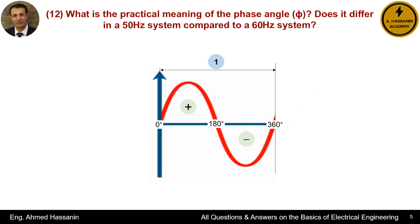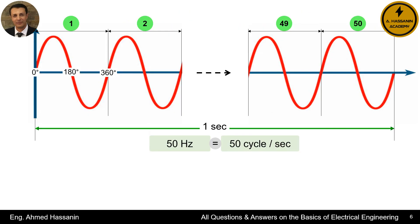The rotation of the rotor through a complete cycle within the synchronous generator consists of a positive half cycle and a negative half cycle, corresponding to 360 degrees. If the frequency is, for example, 50 Hz, this means there are 50 cycles per second. Therefore, to achieve a frequency of 50 Hz, the rotor inside the synchronous generator must complete 50 cycles in one second — in other words, 50 Hz indicates 50 cycles per second.